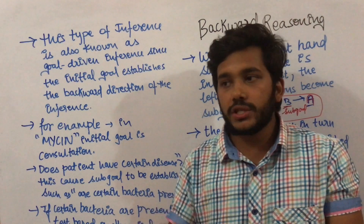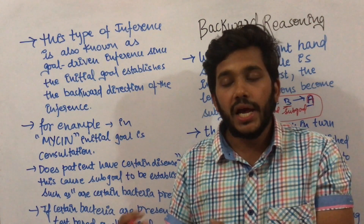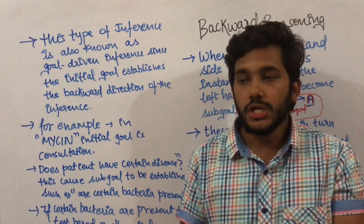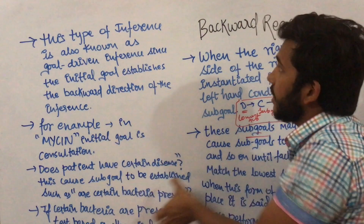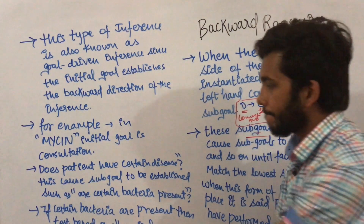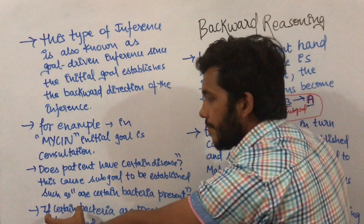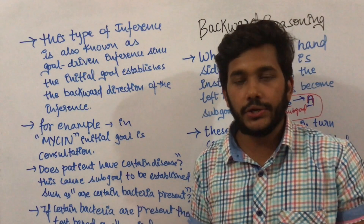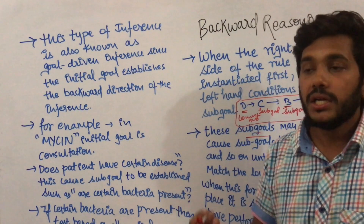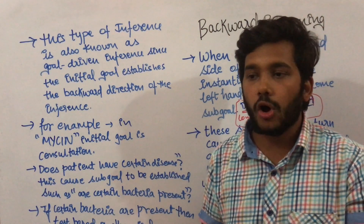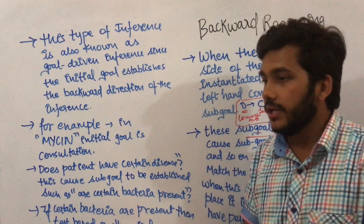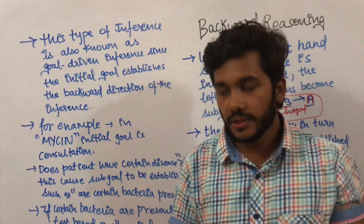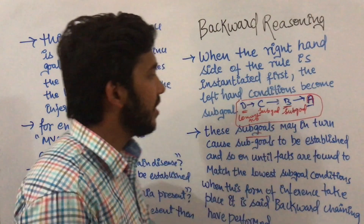After checking which type of bacteria, the next sub-goal is: what symptoms is your body showing and which tests need to be done so that the disease can be cured. If certain bacteria are present, then tests based on them are done — like MRI, CT scan, or blood test. Based on those tests, results are obtained and the doctor can cure the disease. This is backward reasoning in action.